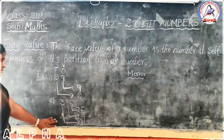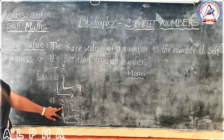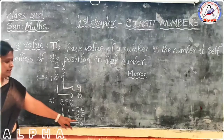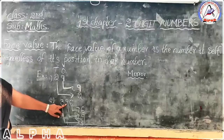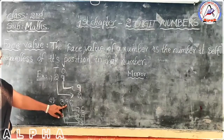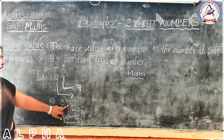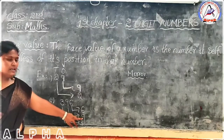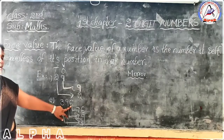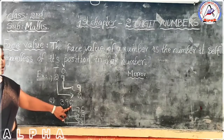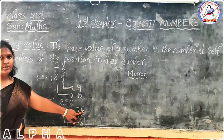Listen again: the face value of a number is the number itself. See here — what is the face value of this 3? It is 3. And what is the face value for this number? The number itself. Here we have 9, and the result is also 9. What is the number here? 6. What is the face value of this 6? 6.